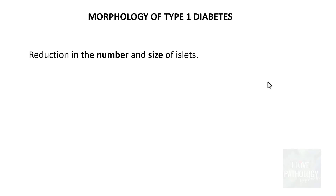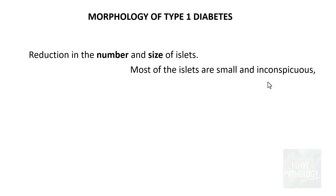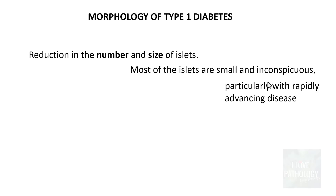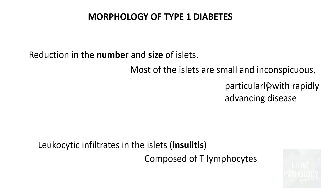Quickly, let us see the morphology of type 1 diabetes mellitus in the pancreas. There is reduction in the number and size of the islets of Langerhans. Most of these islets are very small or can be inconspicuous, particularly in rapidly advancing disease when the patient progresses from stage 2 to stage 3 due to environmental triggers. The second important finding is a leukocytic infiltrate in the islets, called insulitis, and the cells are predominantly T lymphocytes.